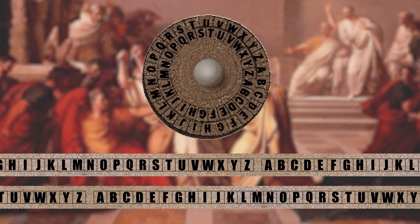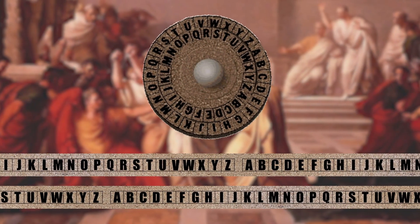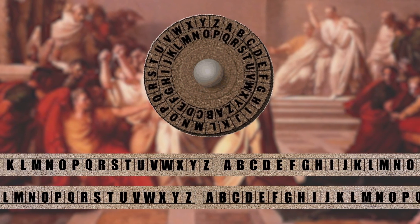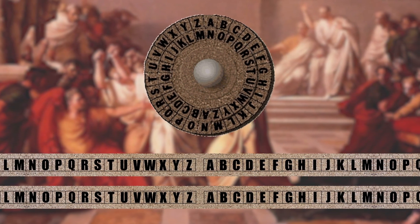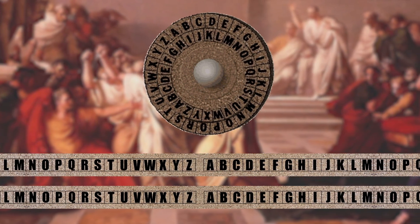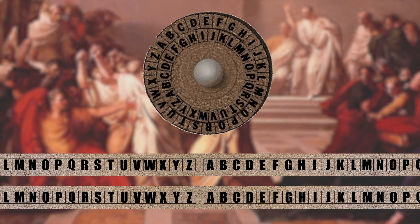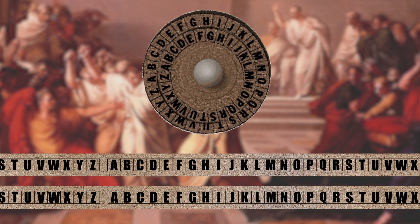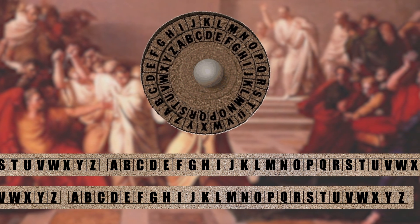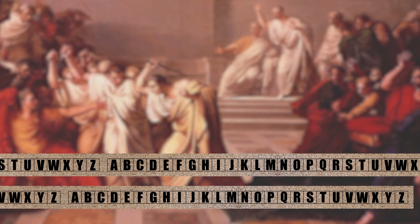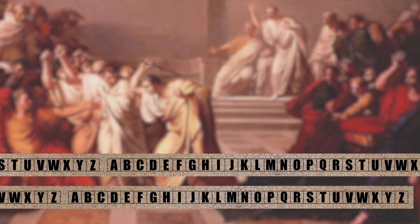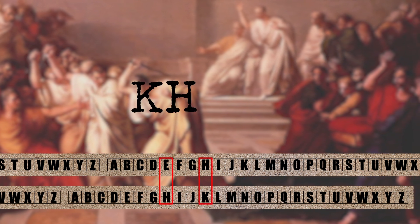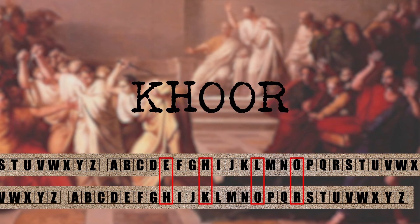The Caesar cipher is based on transposition. It involves shifting each letter of the plain text message by a certain number of letters. Historically, Caesar cipher had a shift of three letters. If one were to encode 'hello' using the Caesar cipher, it would be K-H-O-O-R — 'Khoor'.